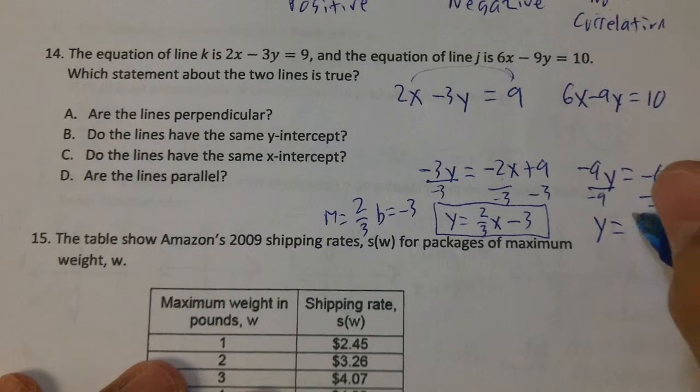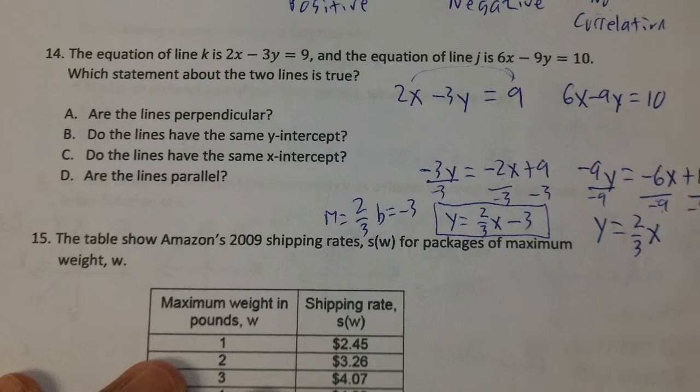Now that I'm going to divide everything by negative 9, I'll end up with y equals - two negatives make a positive - and this simplifies to 2 over 3. And then this is going to be negative 10 over 9.